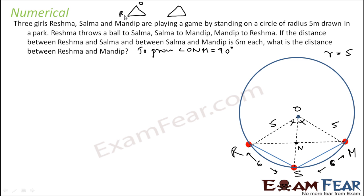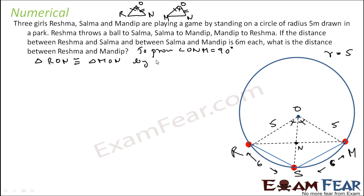Triangle ORN and triangle OMN: OR equals OM (both radii), angle RON equals angle MON (equal chords subtend equal angles), and ON is a common side. So by SAS, triangle ORN is congruent to triangle MON. Therefore, angle ONR equals angle ONM as corresponding angles.